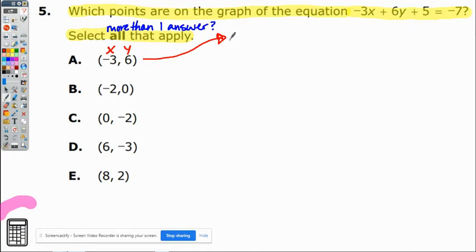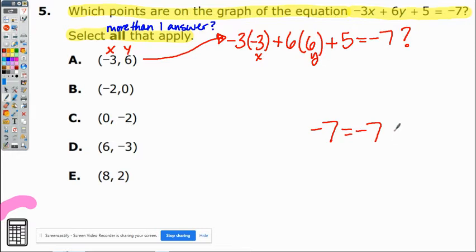The original equation was -3x + 6y + 5 = -7, and there's a question mark because we don't know if it's true. If we do the evaluation of -3 as your x and 6 as your y and we do the math and get -7 = -7 which is a true statement, that means we would circle A. However, if we got some other number, for example 8, then that's a false statement and we would not consider it.